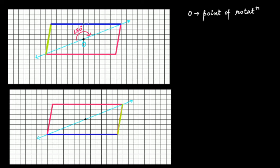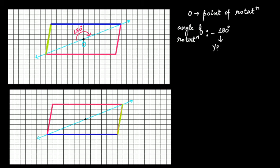Yes, because when this side moves to this side, nothing has actually changed — both sides are equal to each other and parallel. The same is true for the other pair of opposite sides: both pairs are parallel and equal. Therefore, at an angle of rotation of 180 degrees, you get a rotational symmetry.